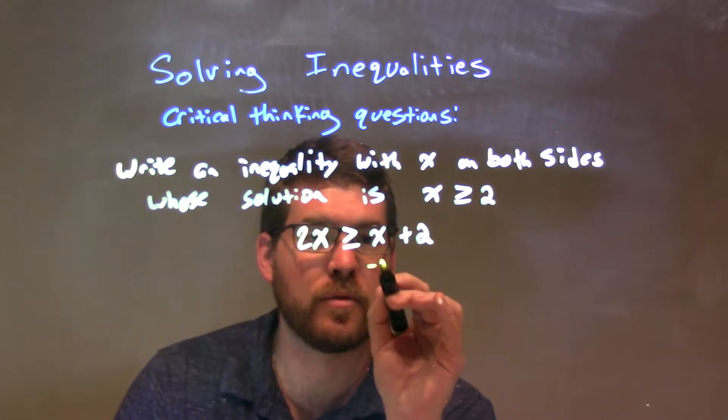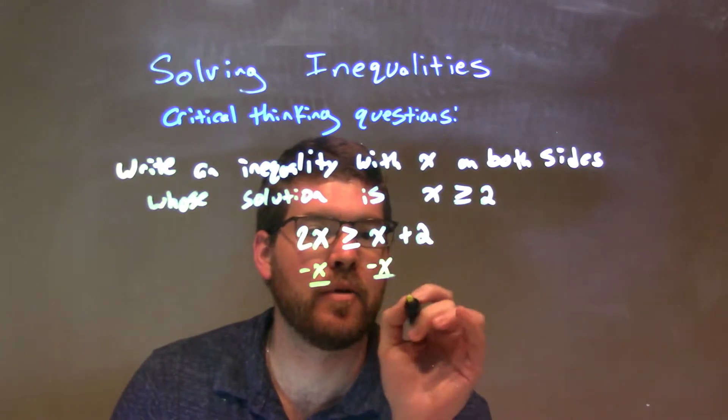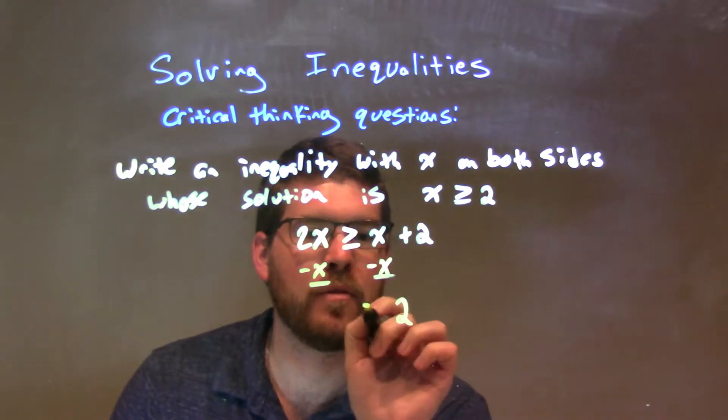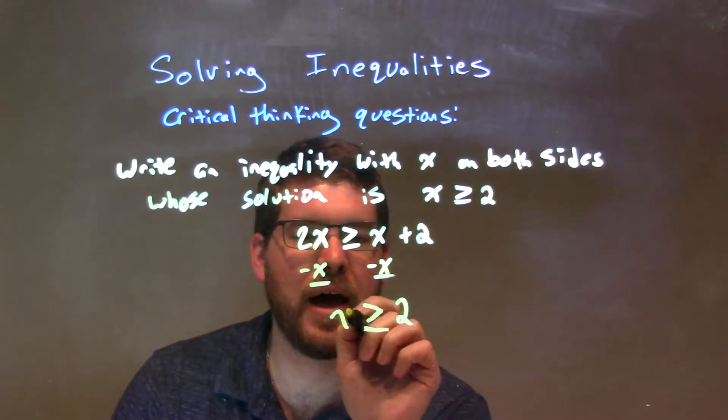I know if I was to solve this, I would subtract an x from both sides. Leave me what I needed, right? The 2 comes down. We have greater than or equal to right here, still greater than or equal to, and then 2x minus x is just x.